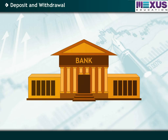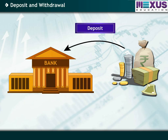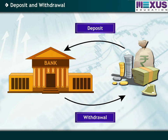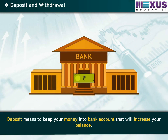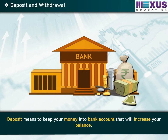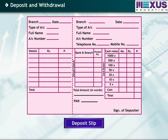There are two main features of a bank: deposit and withdrawal of money. Deposit means to keep your money into a bank account, which will increase your balance. To deposit money in our account, we need to fill a deposit slip. To know that the money is deposited in our account, we need a passbook.